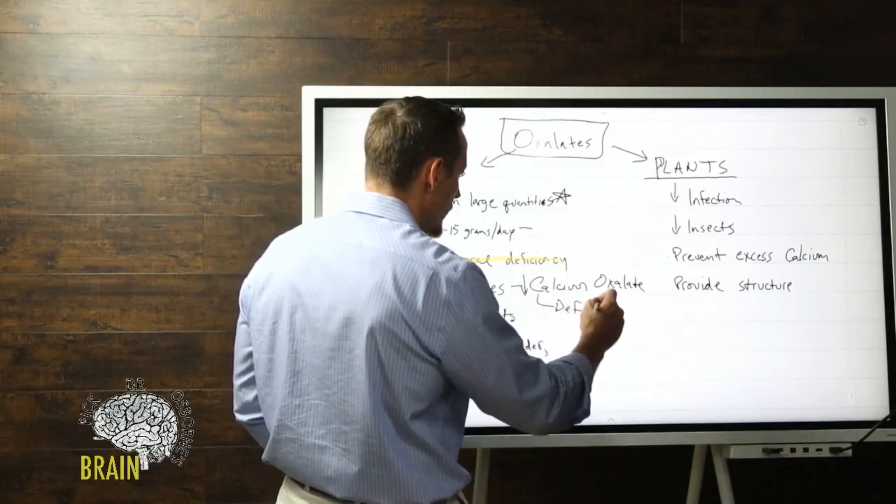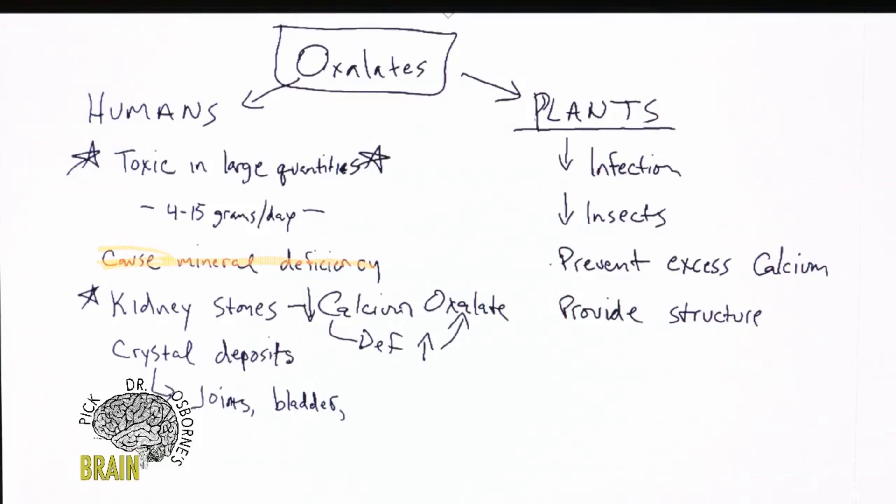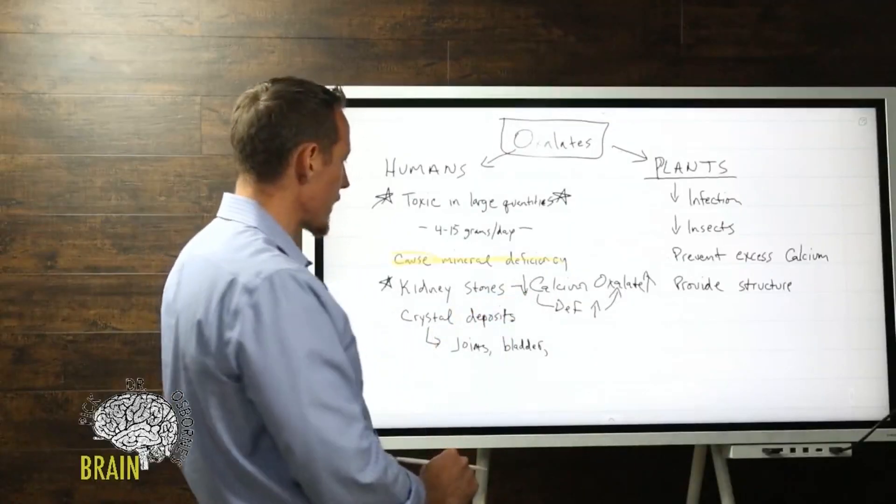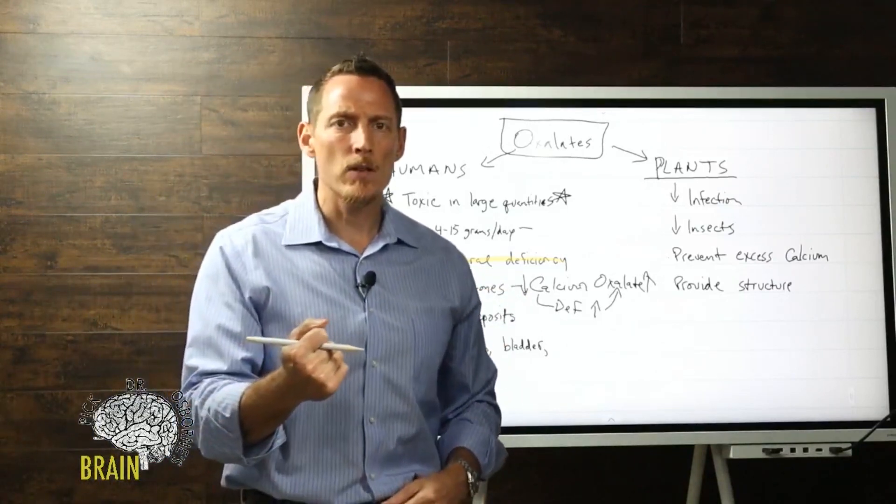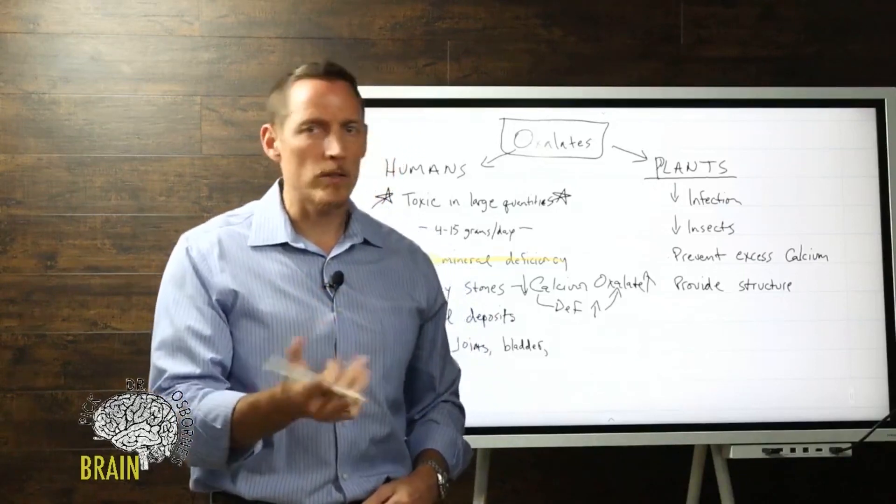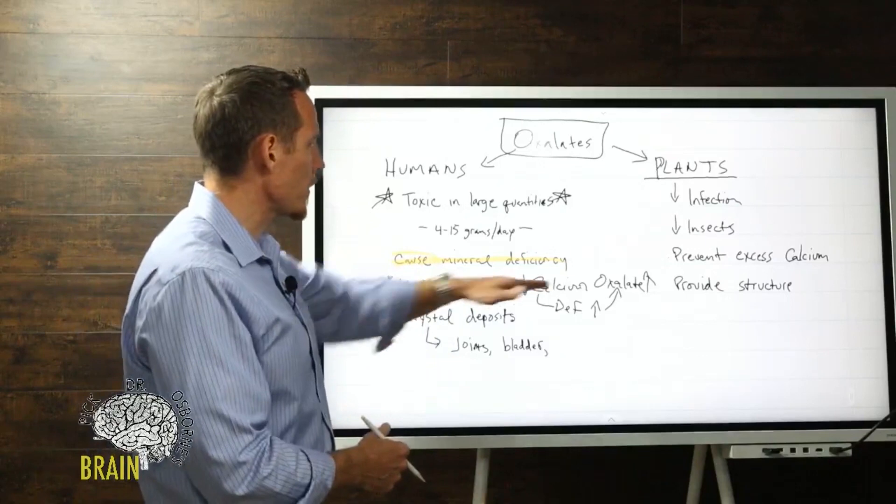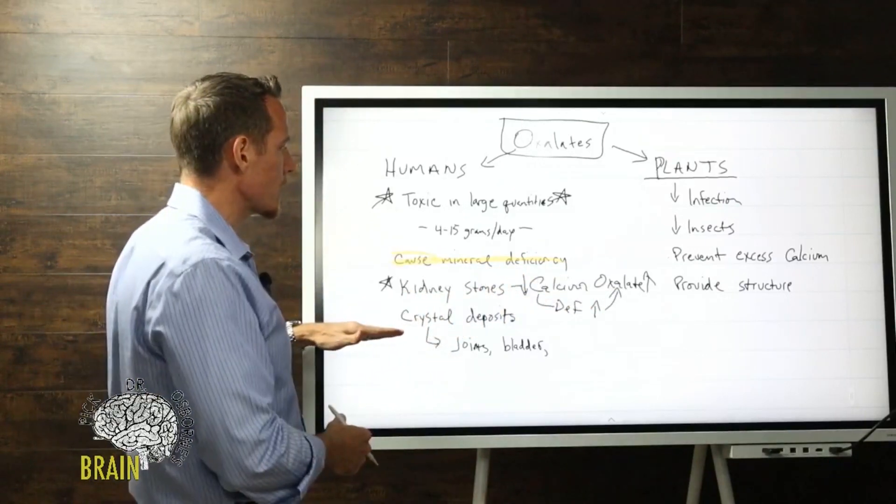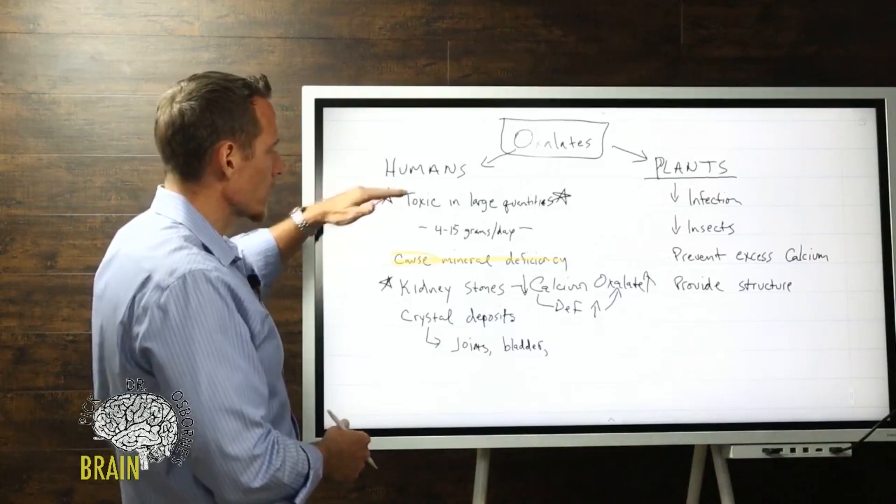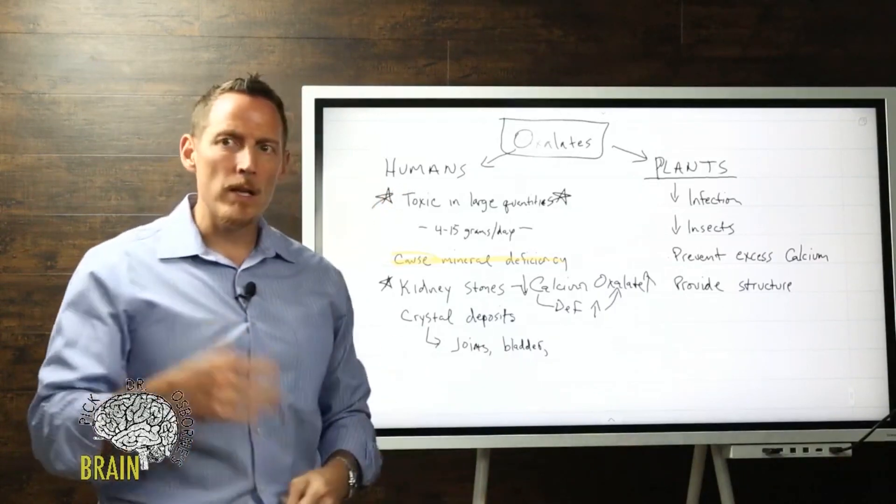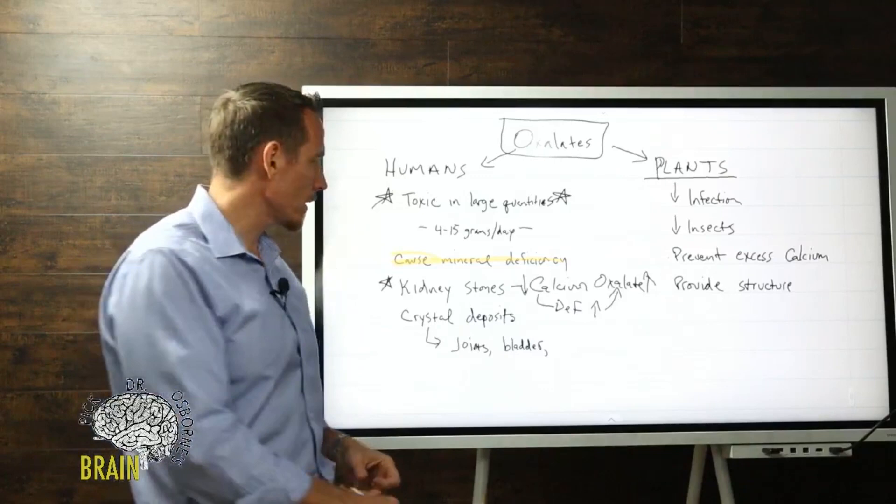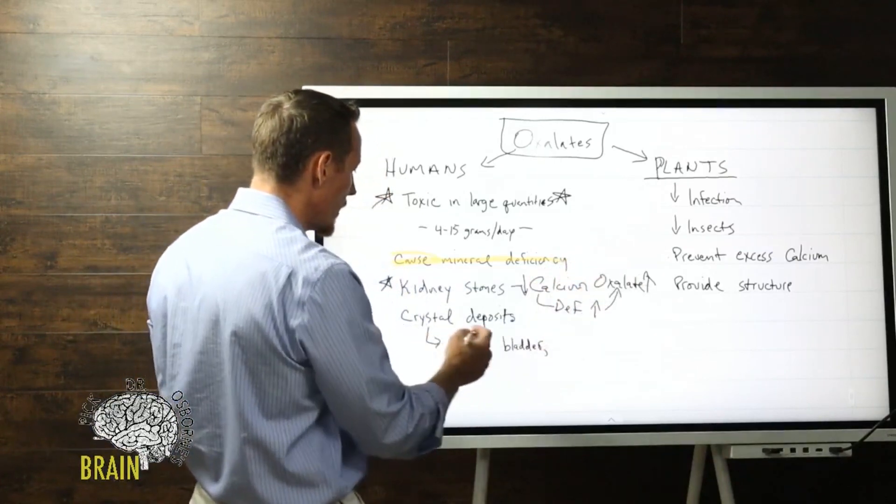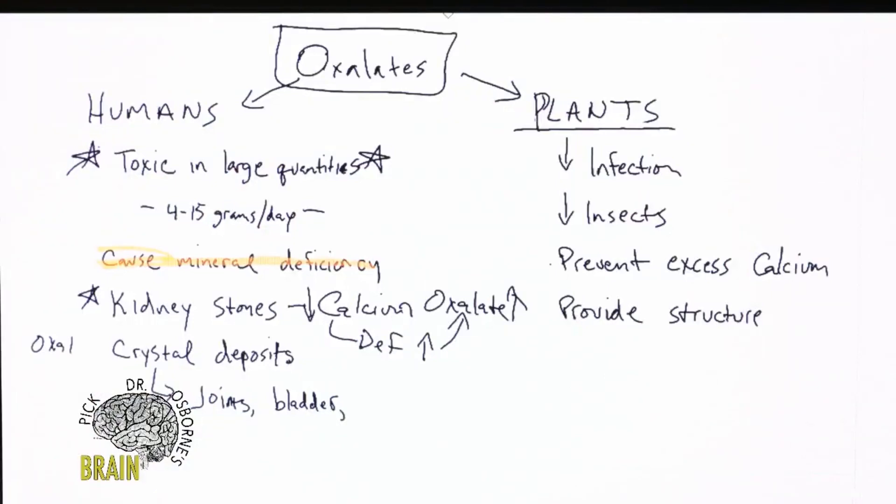We'll talk more in depth about that in a minute. Kidney stones - the predominant type of kidney stone isolated and identified in individuals is known as a calcium oxalate stone. You can also have magnesium-based stones and other stones, but calcium oxalate are the most common. Then we've got crystal deposition that can occur with toxicity of oxalates. If you've ever heard of gout - gout is a form of uric acid crystal - well, oxalate toxicity can cause oxalate crystals to form.